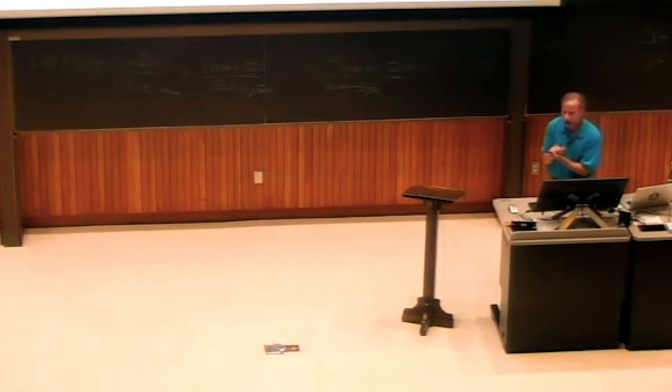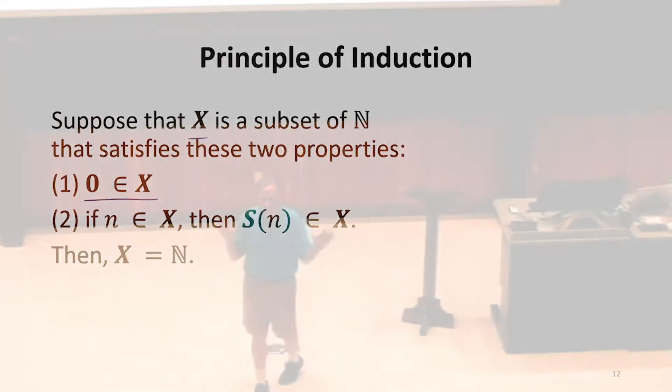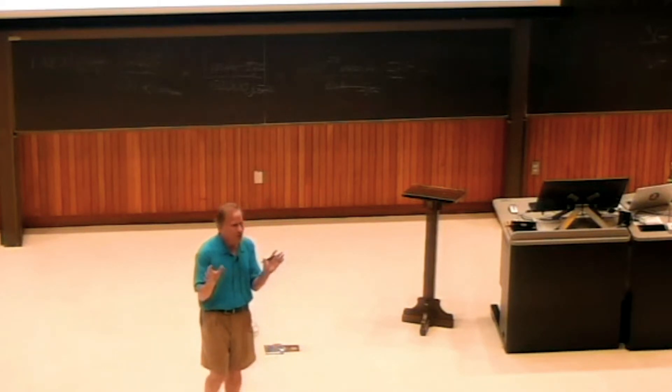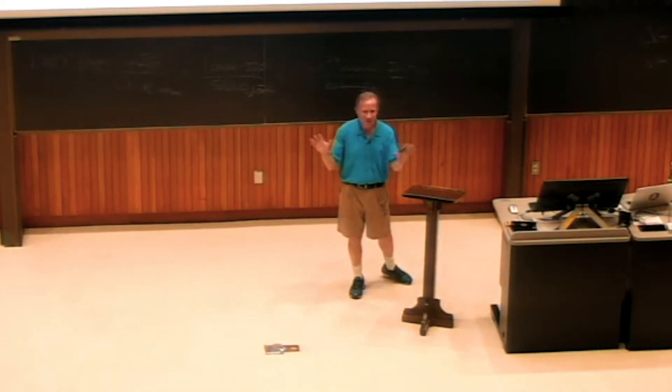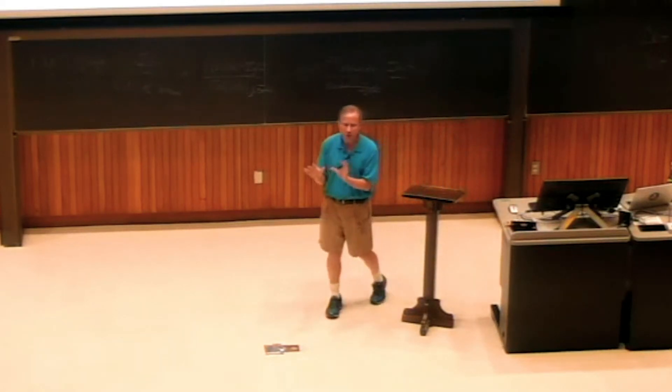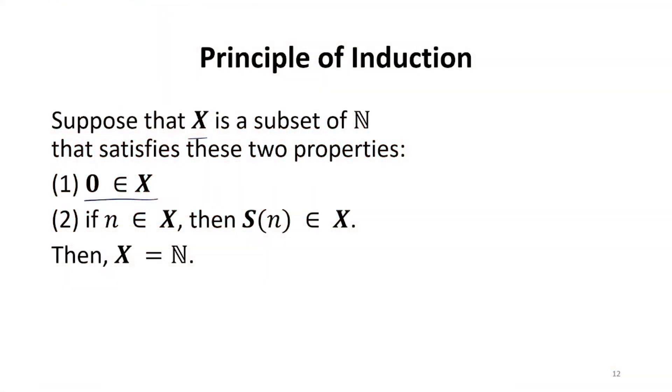The principle that induction builds on is this. If we have some subset of the natural numbers, we'll call it X, and it has to satisfy two properties. We've introduced all these weird ways of writing the natural numbers. From now on, by default, I'm going to write them using the common understanding and we're going to think of the numbers the way you are all intuitively familiar with the natural numbers before this class.